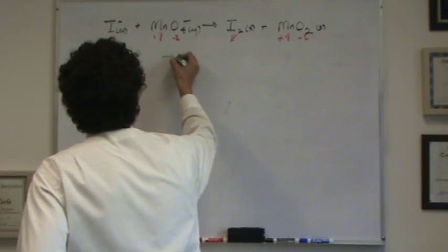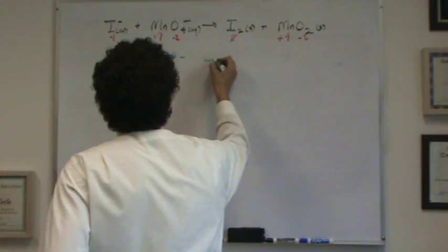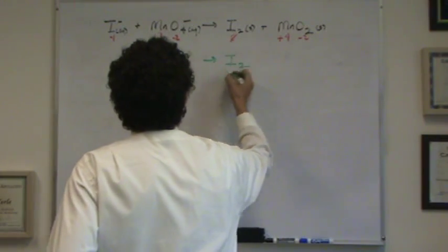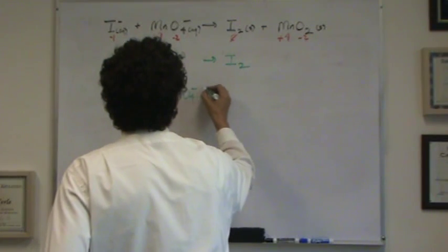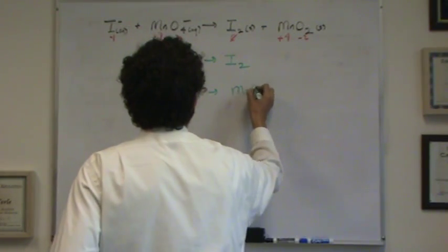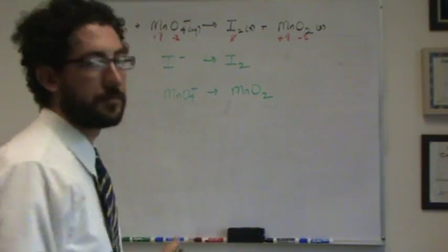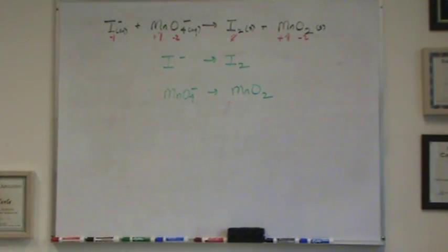We've got to separate them out into likes. Iodine is similar, so you put it together in a half reaction. And manganese is similar. The iodine gets oxidized. The top one's the oxidation half reaction. The bottom one is the reduction half reaction.